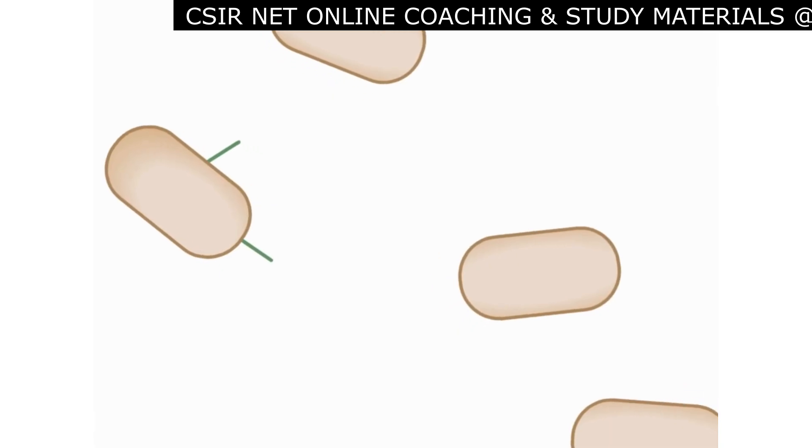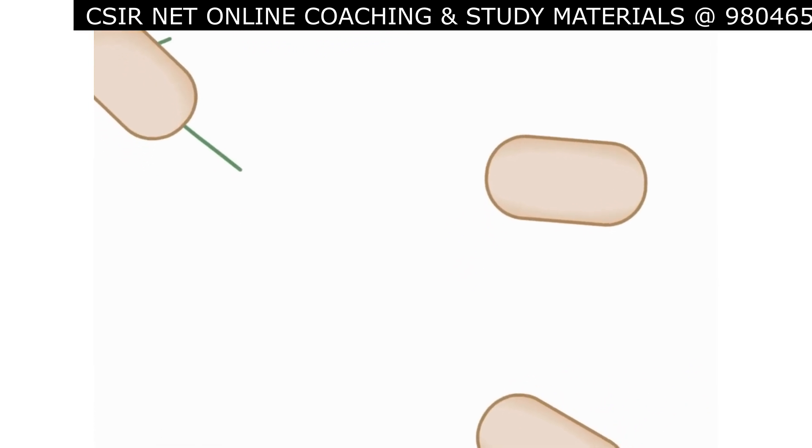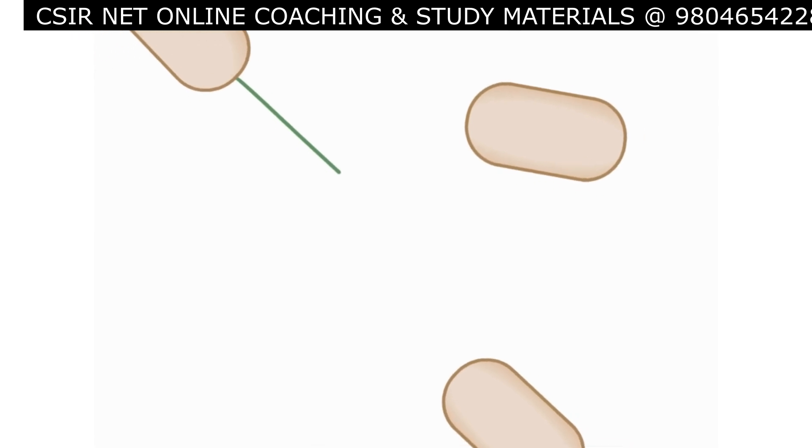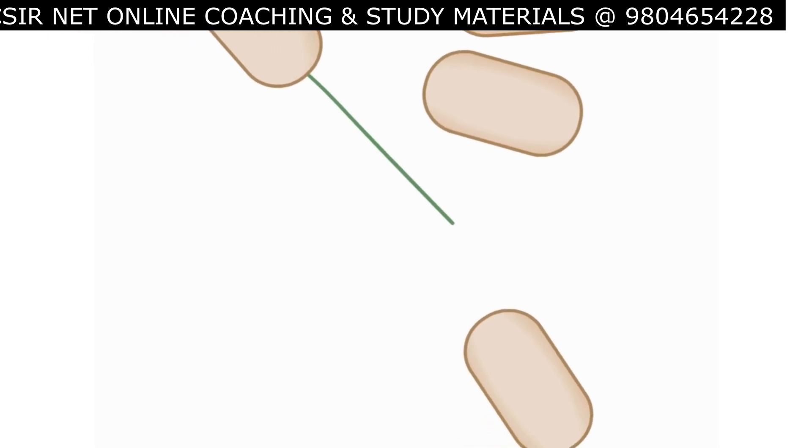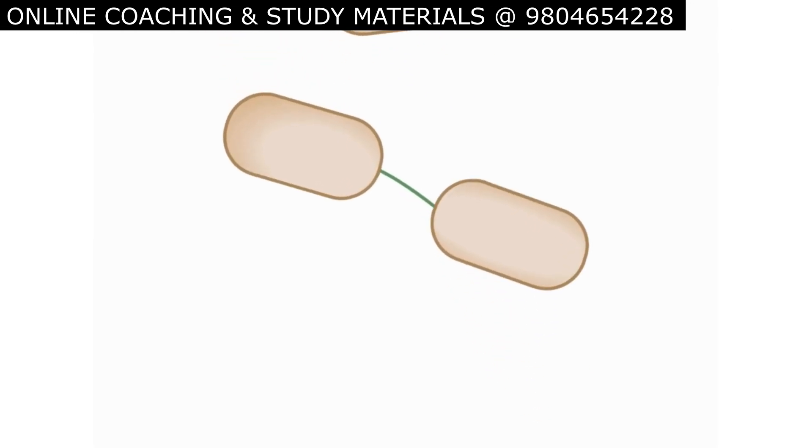Sex pili grow and shrink as they sample the environment around them. The tip of the sex pilus attaches to a receptor on the recipient cell, and then the pilus retracts, drawing the two cells closer.